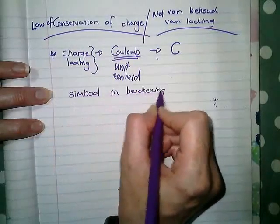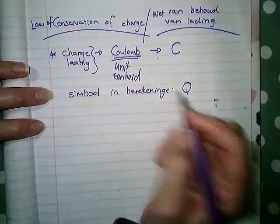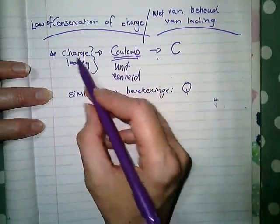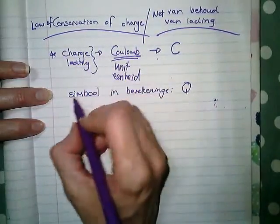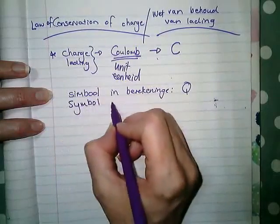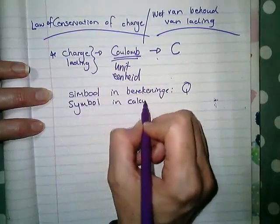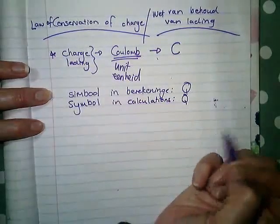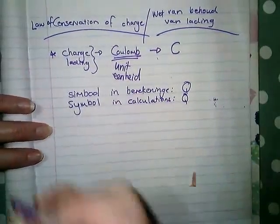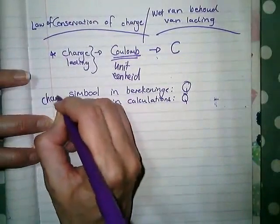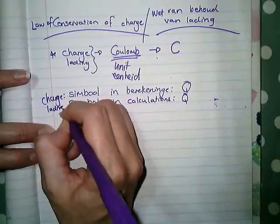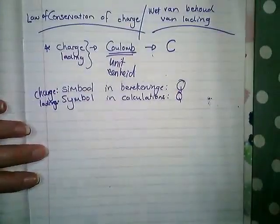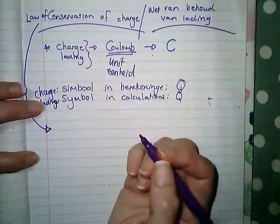So lading word gemeet in die eenheid coulomb en ons skryf dit af met die hoofletter C. This is the unit, die eenheid. But the symbol in calculations, wanneer ons berekeninge doen, gebruik ons 'n Q, capital letter Q. So the unit that charge is measured in is coulombs, but the symbol we use in calculations is a capital Q for charge. Die Q is vir lading.